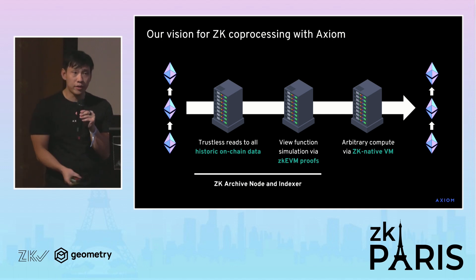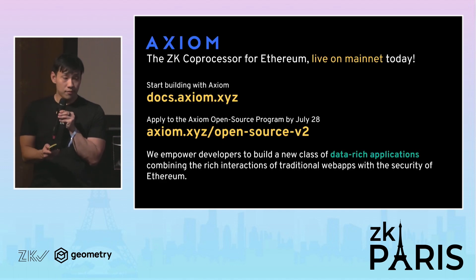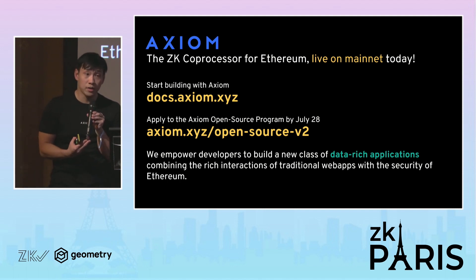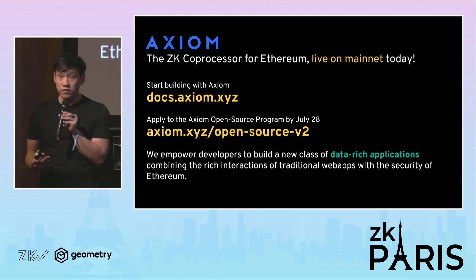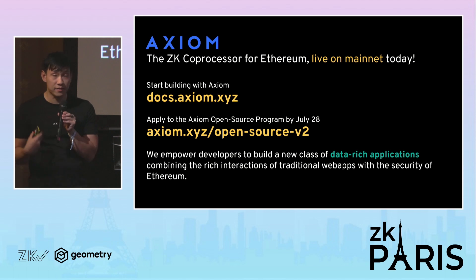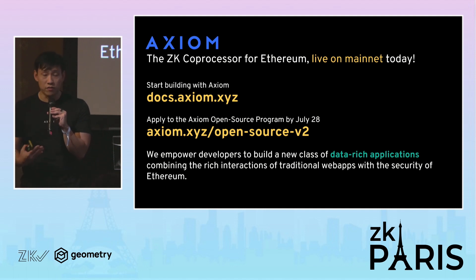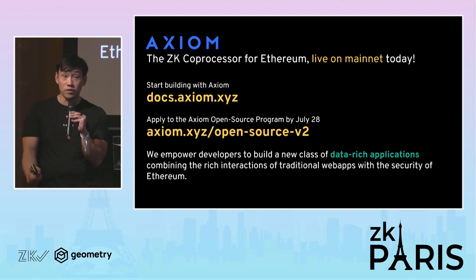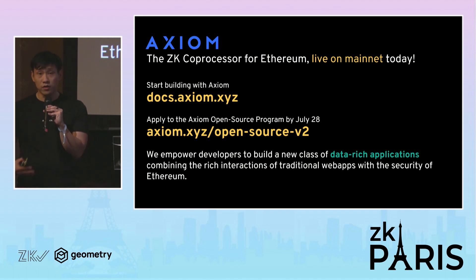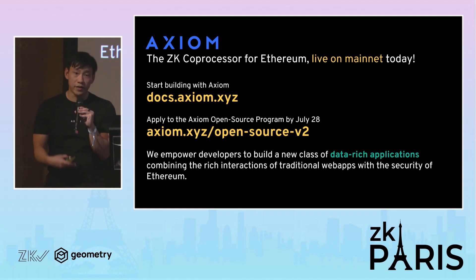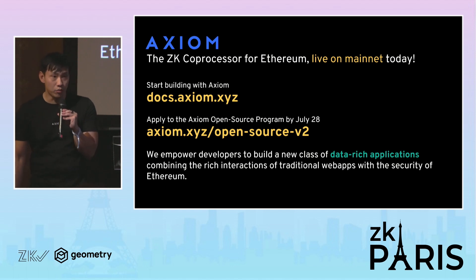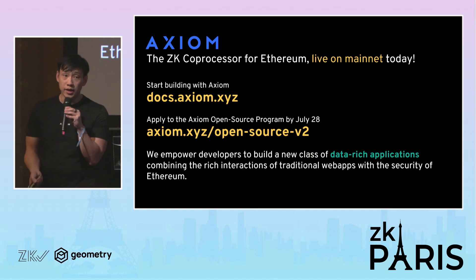We're Axiom — the ZK coprocessor for Ethereum. We just launched our mainnet two weeks ago. You can check out our developer docs and try us out fully self-serve at docs.axiom.xyz. We also think ZKEVM is a bit too much of a black box for ordinary developers today, so we started the Axiom Open Source Program to help change that — teaching developers how to write ZK circuits and develop ZKEVM applications. Our first iteration finished a couple weeks ago; participants built things like fixed-point arithmetic, ED25519 signatures, and other fundamental ZK primitives. Applications for the second iteration close July 28th.